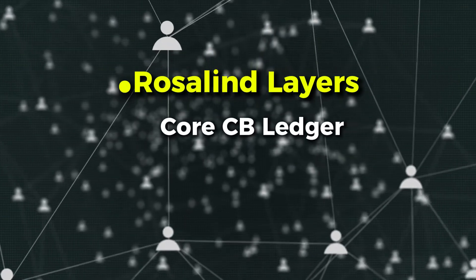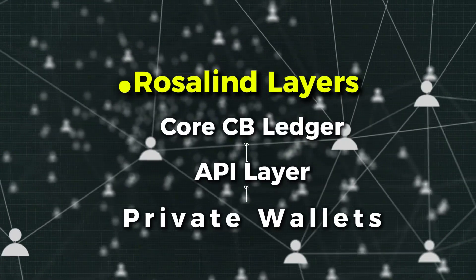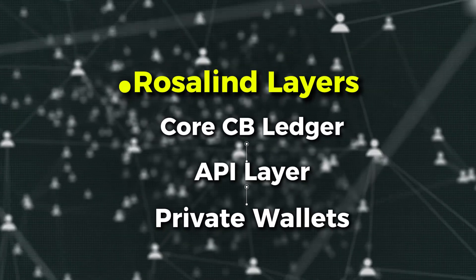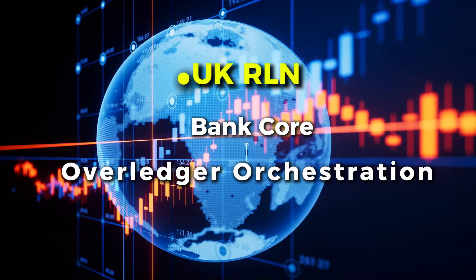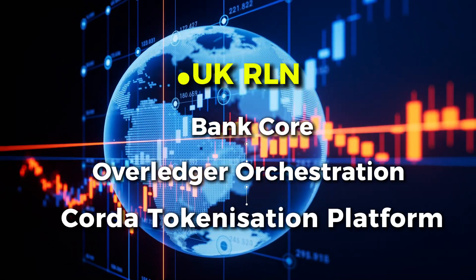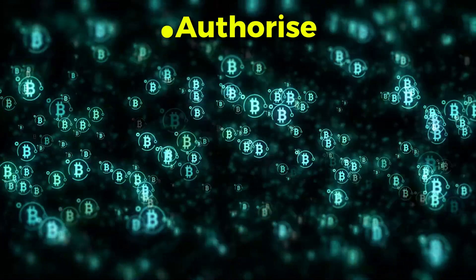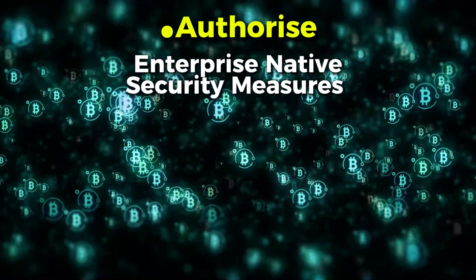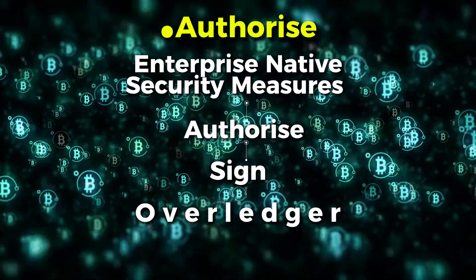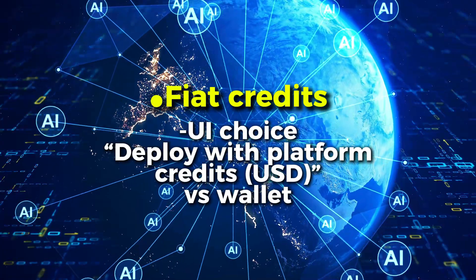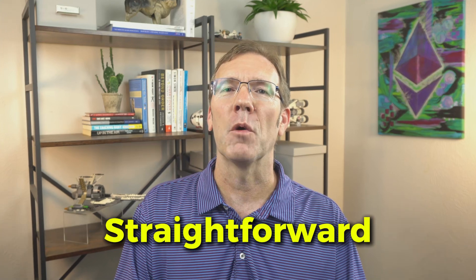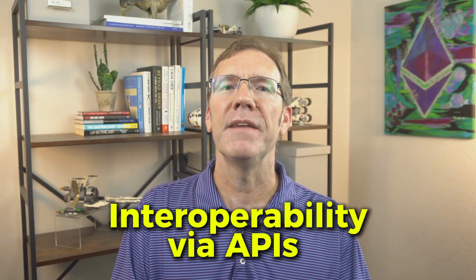Here's a quick tour of how this actually looks architecturally. Rosalind: core CB ledger → API layer → private wallets, with Overledger used in ledger API simulations. UK RLN: bank core → Overledger orchestration → Corda tokenization platform. Authorized: enterprise-native security measures → Authorize → sign → Overledger → chains. And fiat credits: UI choice — deploy with platform credits versus a crypto wallet.